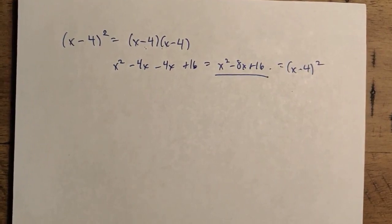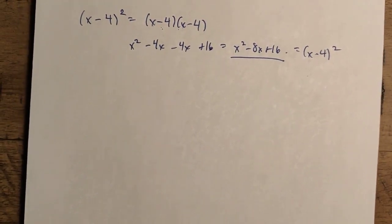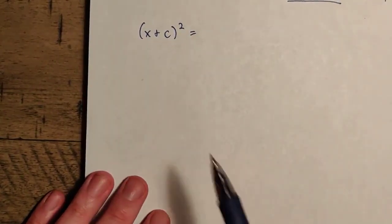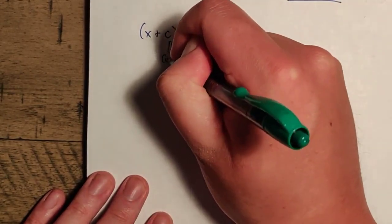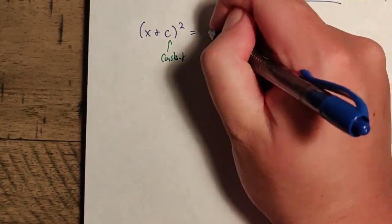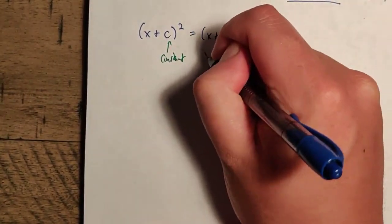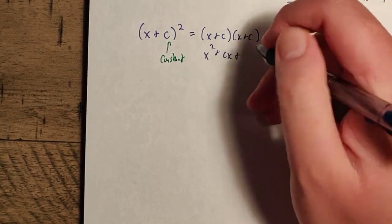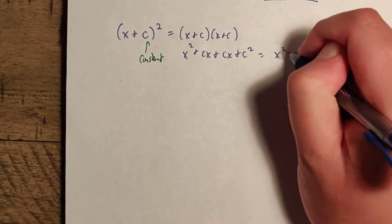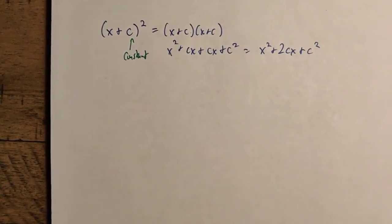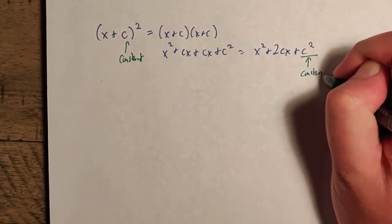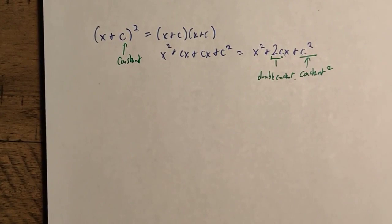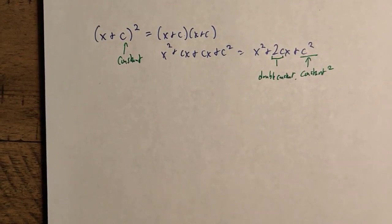Let's try something else. We're going to say (x + c)² for some constant c. In much the same way, we write (x + c)(x + c) and distribute: x² + cx + cx + c², which gives x² + 2cx + c². Notice that the constant c appears doubled in the middle term, and squared as the last term.